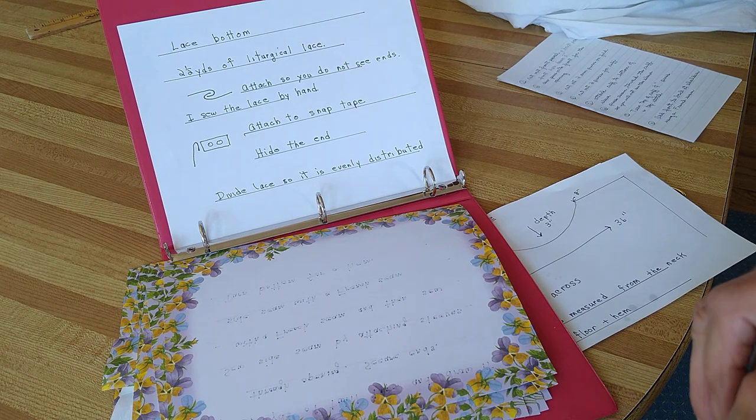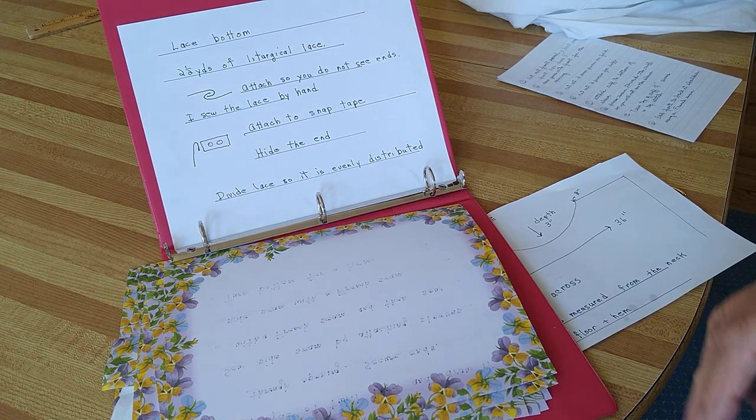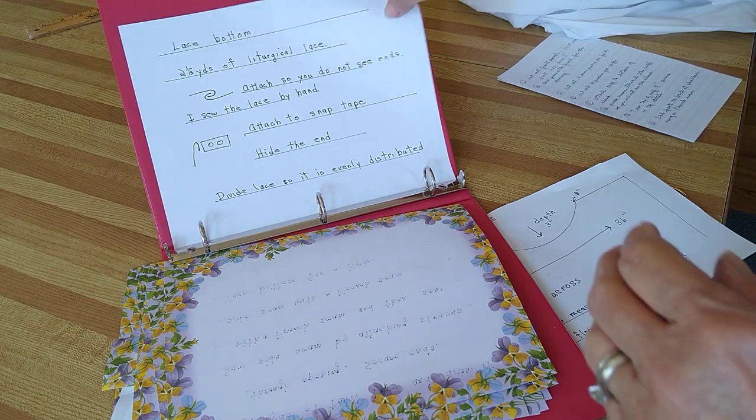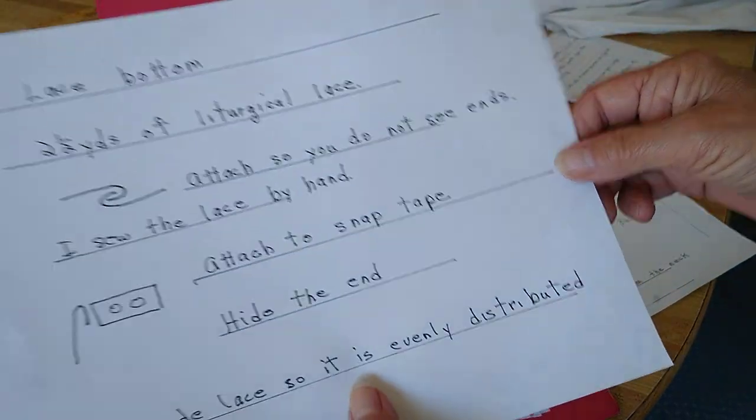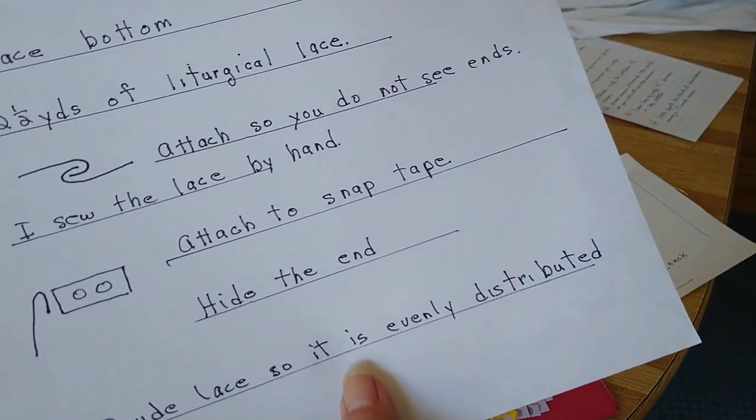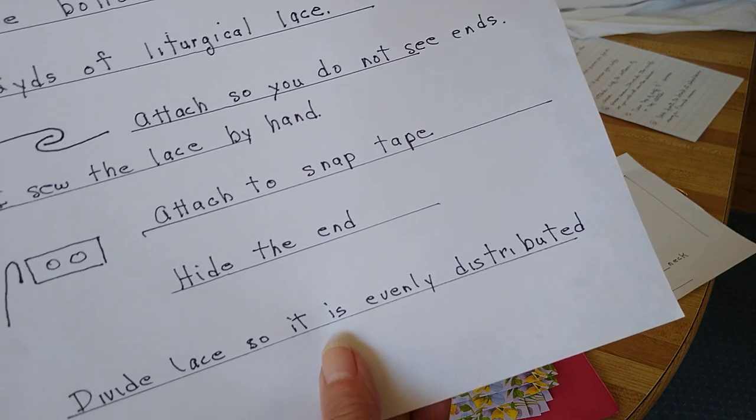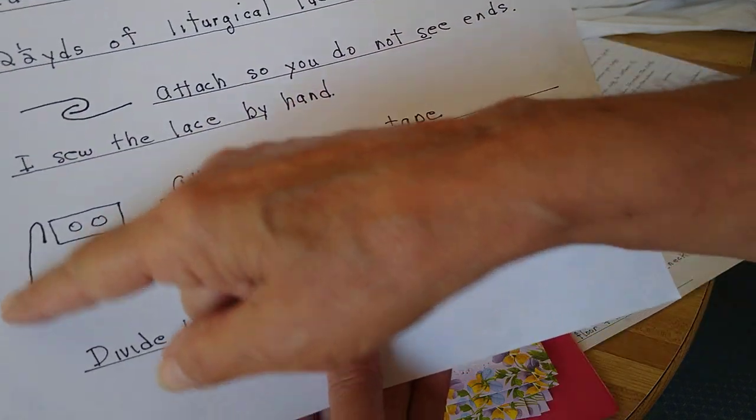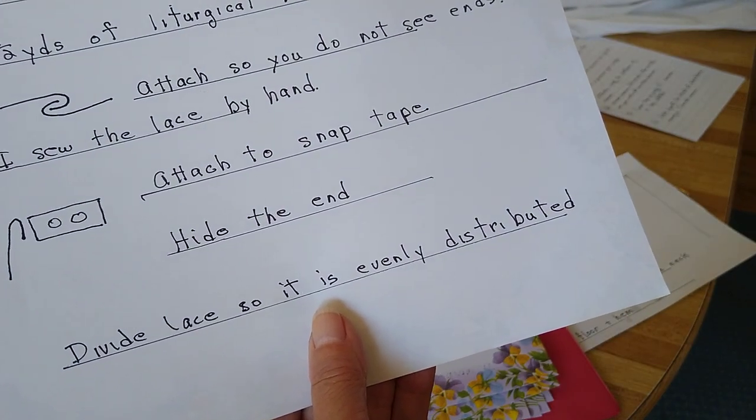If you decide to have a lace bottom it takes two and a half yards of liturgical lace. I attach that lace together by hiding the end seams one into the other and I'd sew them by hand. When I'm attaching the lace to the snap I just turn it so the end of that lace is behind the snaps.